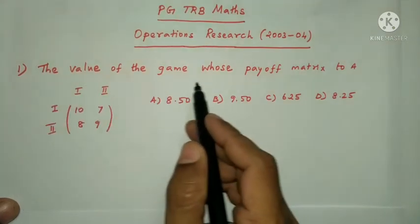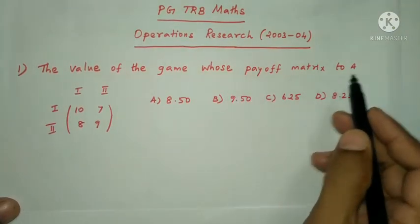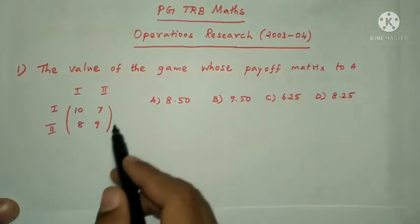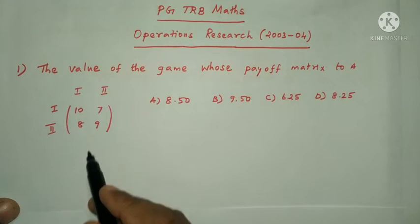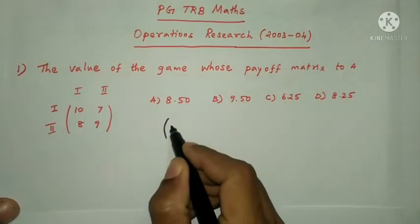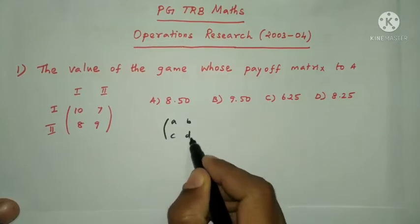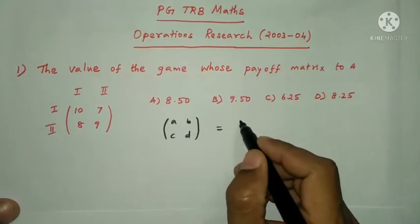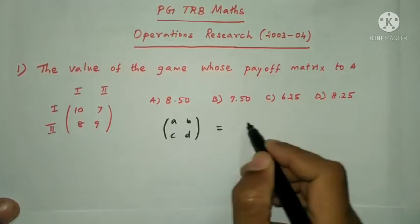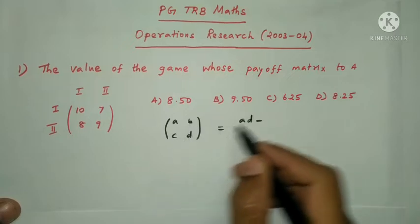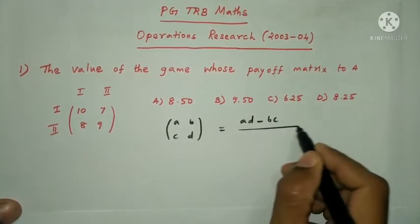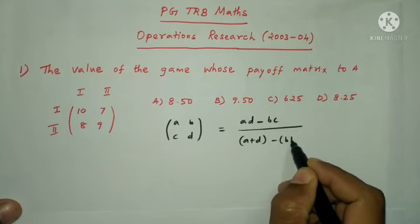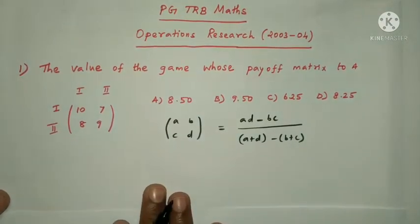First question: the value of the game whose payoff matrix is a 2x2 matrix. In general, for a 2x2 matrix with elements A, B, C, D, the game value formula uses the leading diagonal elements: AD minus BC, divided by A plus D minus B plus C. This is the game theory formula.